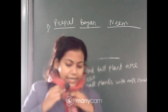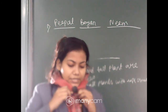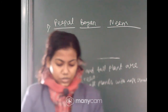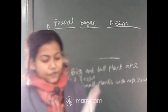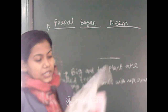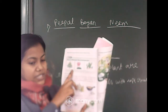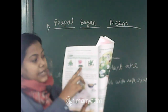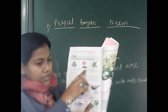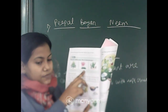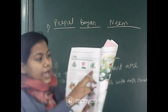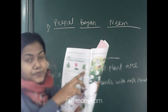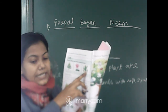Plants grow in different places. Where do these plants grow? First one — this is pine; it grows in hilly areas. This is a lotus plant, which grows in a pond. And this is cactus, which grows in the desert.